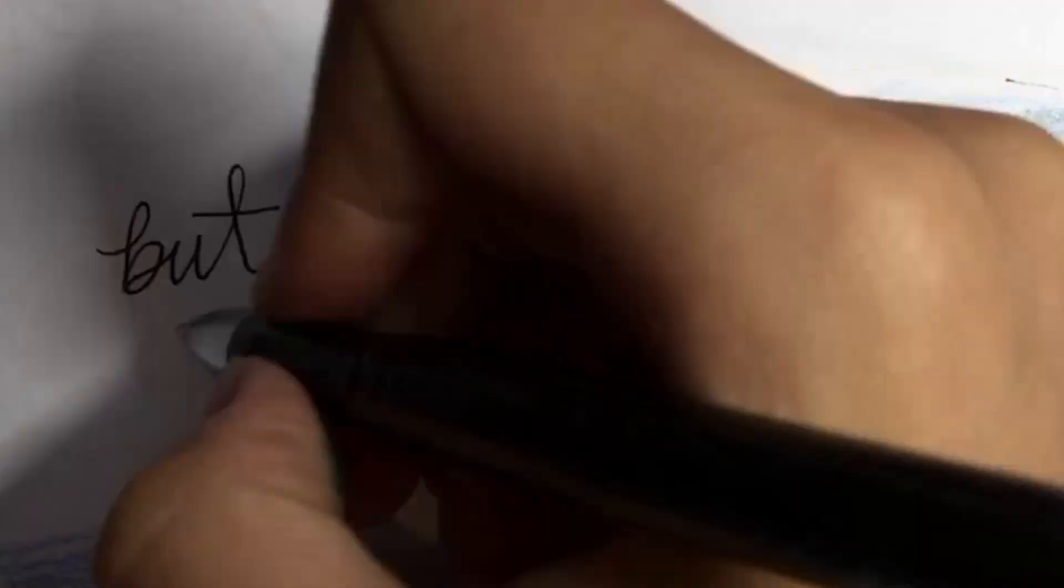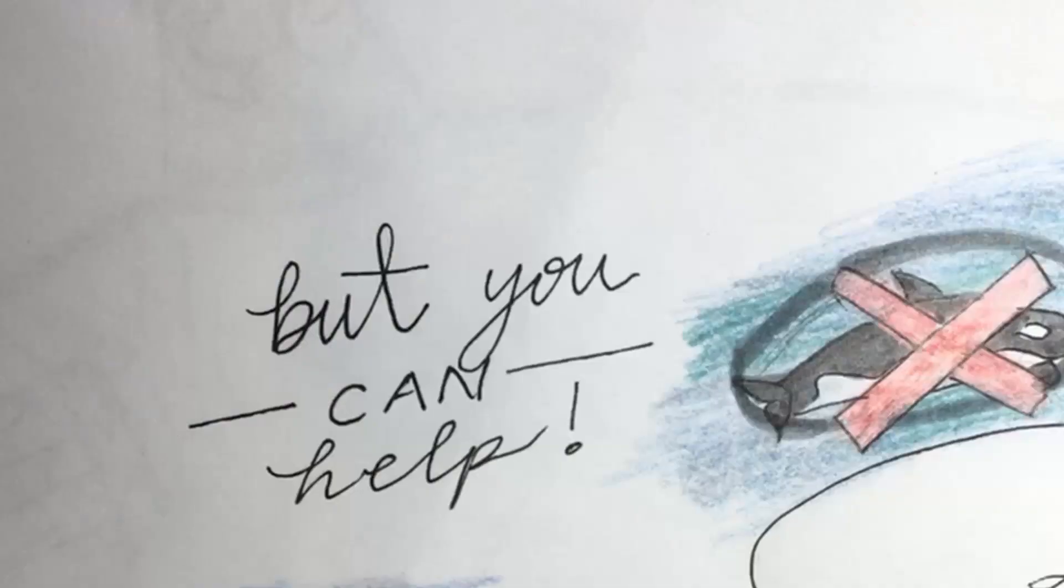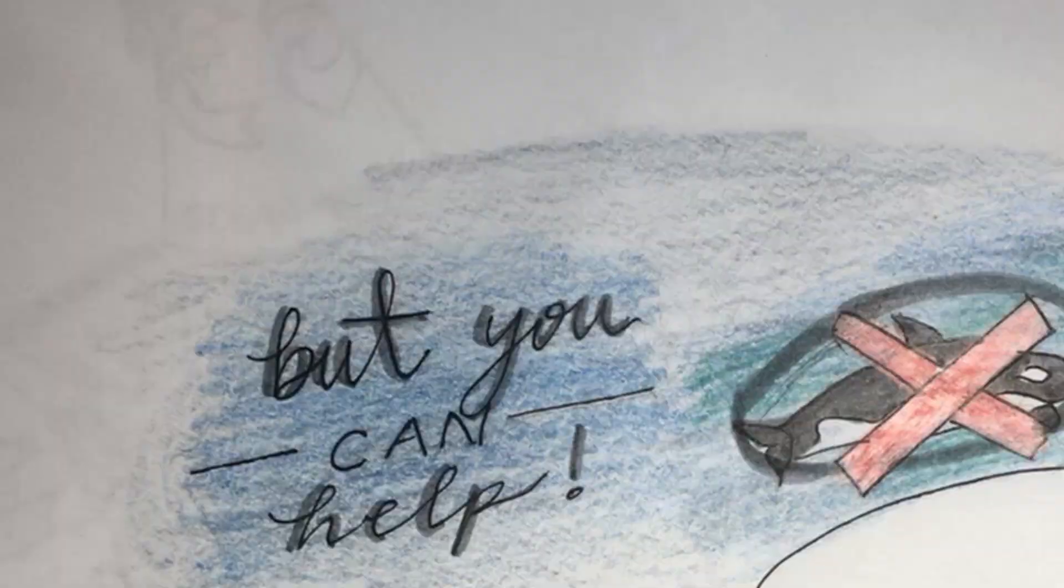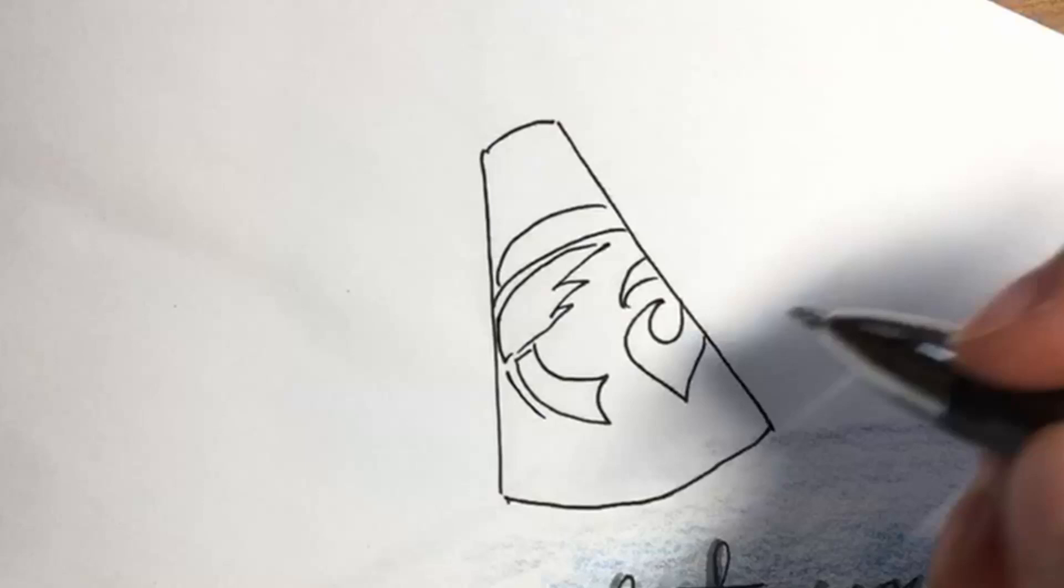The good news is that you can help. In fact, there are so many simple things we can do to help orcas. We can buy sustainable and ocean-friendly food. This symbol, the ocean-wise symbol, means that the fish had been caught without harming sea life, including orcas. This means that they will have enough salmon.